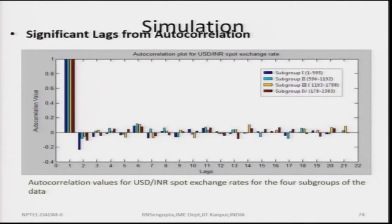Using the time series concept of lags and autocorrelation, subgroups are formed. We have a dataset of 2,383 data points, with subgroups from 1 to 595, 596 to 1192, 1193 to 1788 (should be 1189), and 1189 to 2383. Based on these subgroups, the autocorrelated values of the USD to Indian spot rate for four subgroups are calculated and used to proceed.